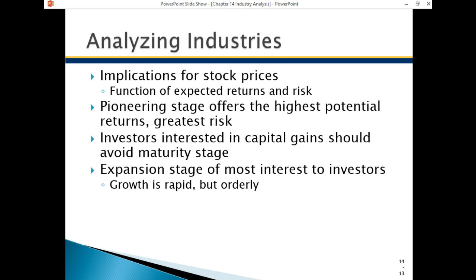You can get an expectation of returns based on the life cycle stage. In the growth phase, there should be a lot of returns. In the pioneering phase, it's very risky — there may be no returns. Many bioengineering, biotechnology, and pharmaceutical stocks are in the pioneering stage trying to make products that will cure cancer or certain diseases, but haven't made any money yet. In a mature stage, capital gains may be very difficult, but the company may be paying more dividends. The expansion stage with rapid growth is where you want to be for capital gains.